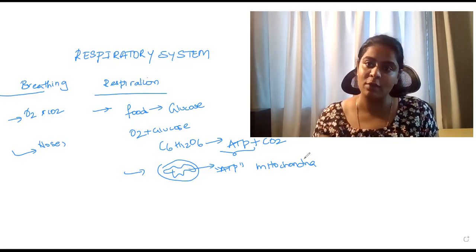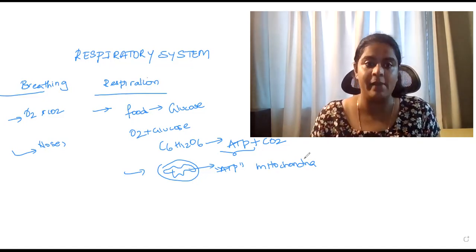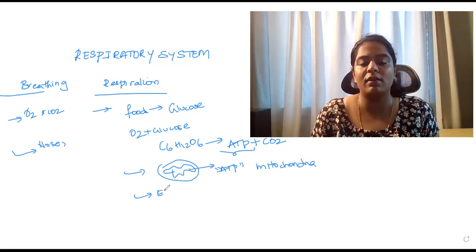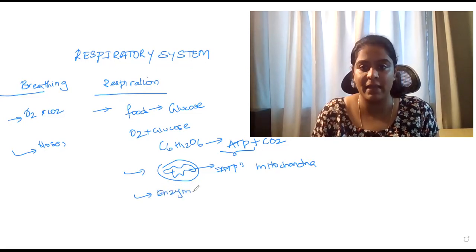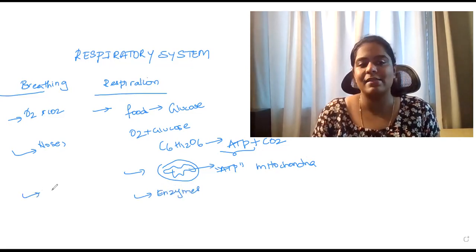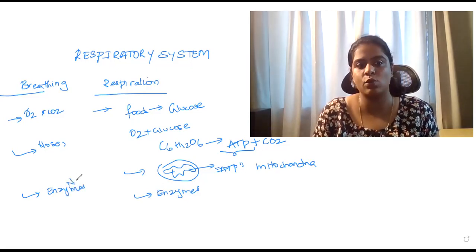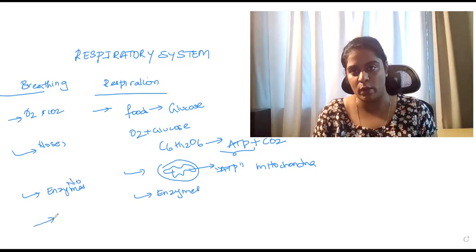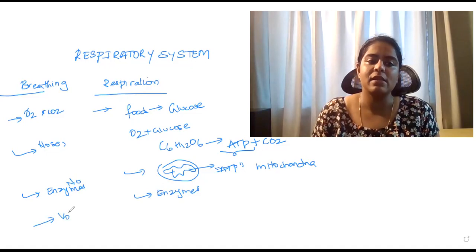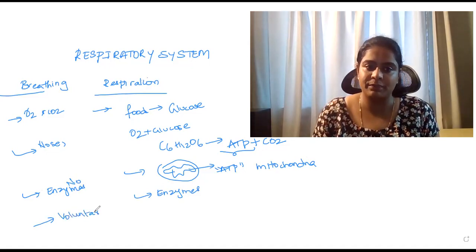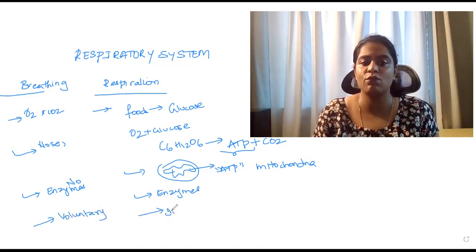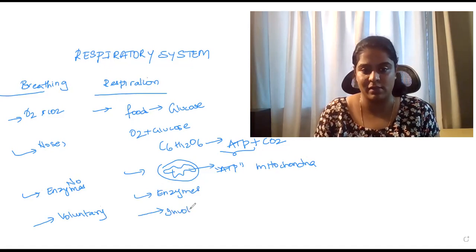That's the reason mitochondria is called the powerhouse of the cell, and for this process to occur there are a lot of enzymes that play an important role. Whereas in breathing, enzymes do not play an important role — there are no enzymes involved. Also, breathing is a voluntary process and respiration is an involuntary process.